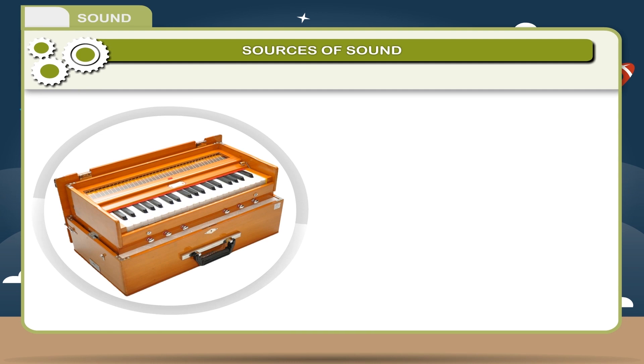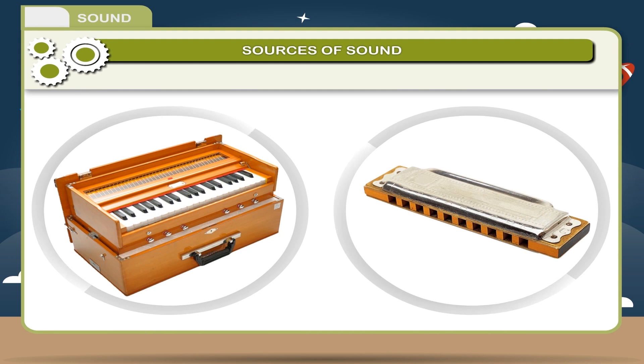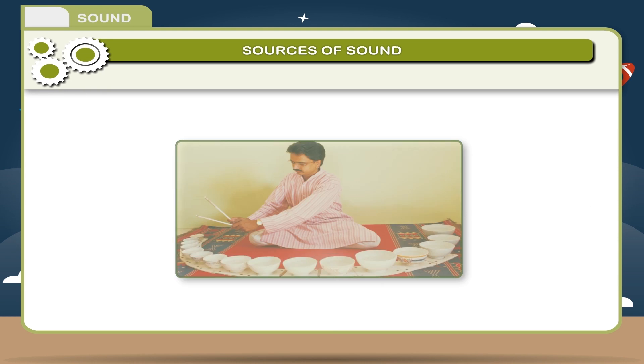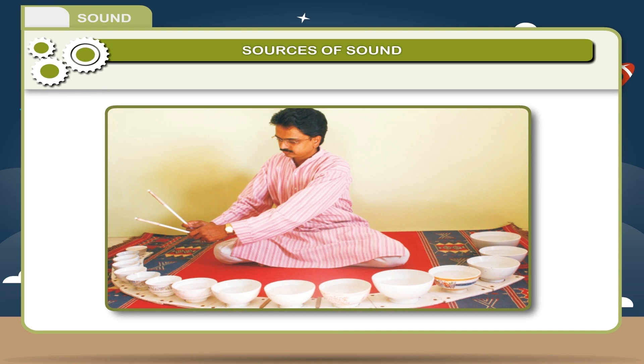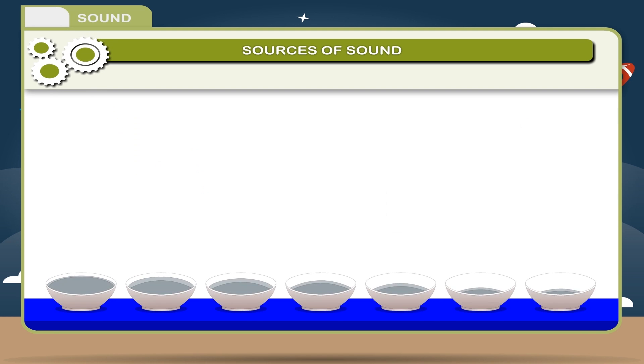Reed Instruments. Harmonium and mouth organ are the examples of reed instruments. They produce sound when air is blown in it. Activity. Sound produced by Jaltarang, waves in water. Take cups of equal size and put different amount of water in them. The space above the cup is an air column of different lengths. When you beat these cups with a stick, the air column will vibrate and different kinds of sound will be heard. An instrument called Jaltarang is based on this principle.